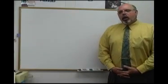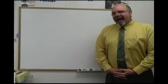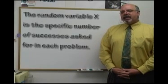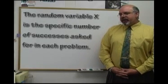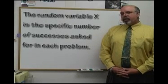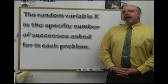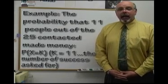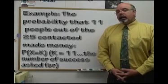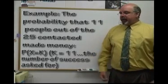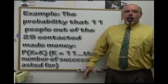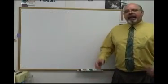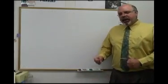Part 4B, what is X in words? That is the specific number of people that made money out of the 25 homeowners contacted. It could be anything — it could be 10, it could be 12, it could be 24. That changes with each problem.